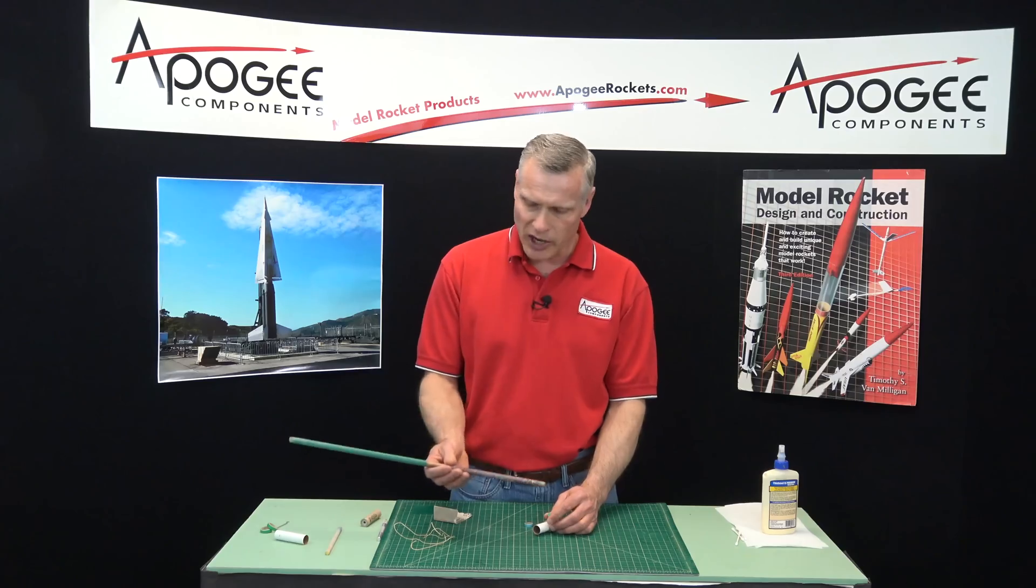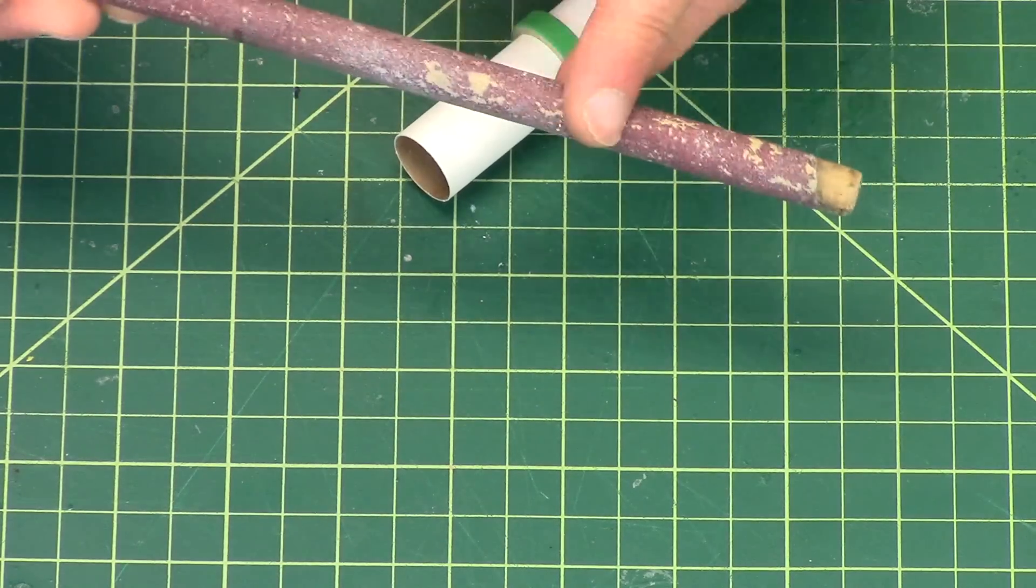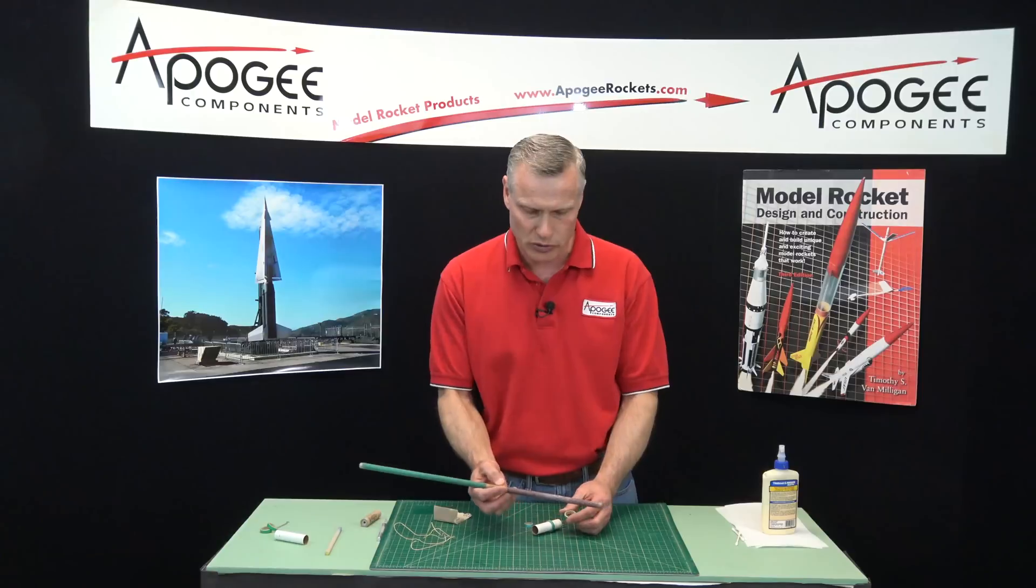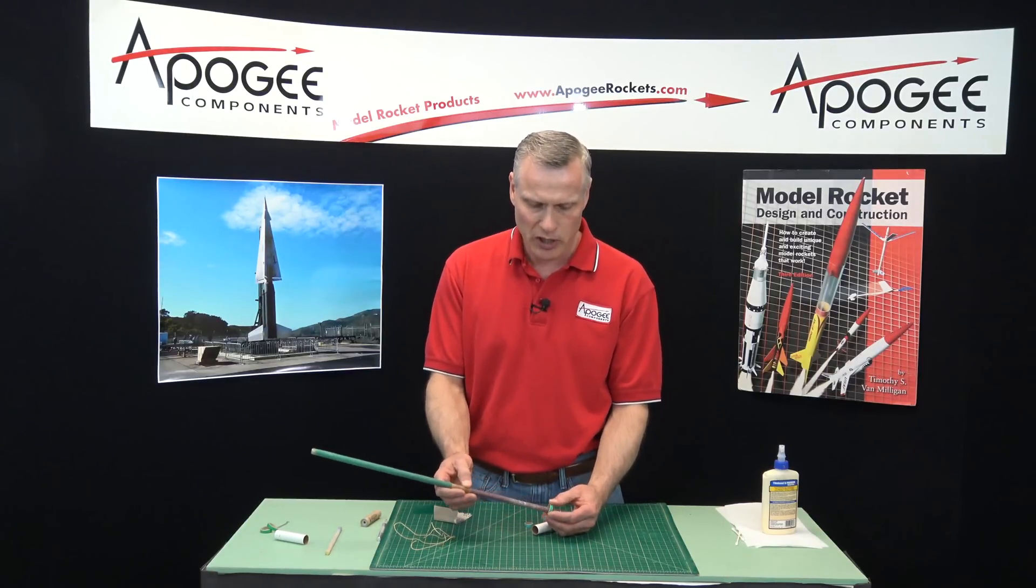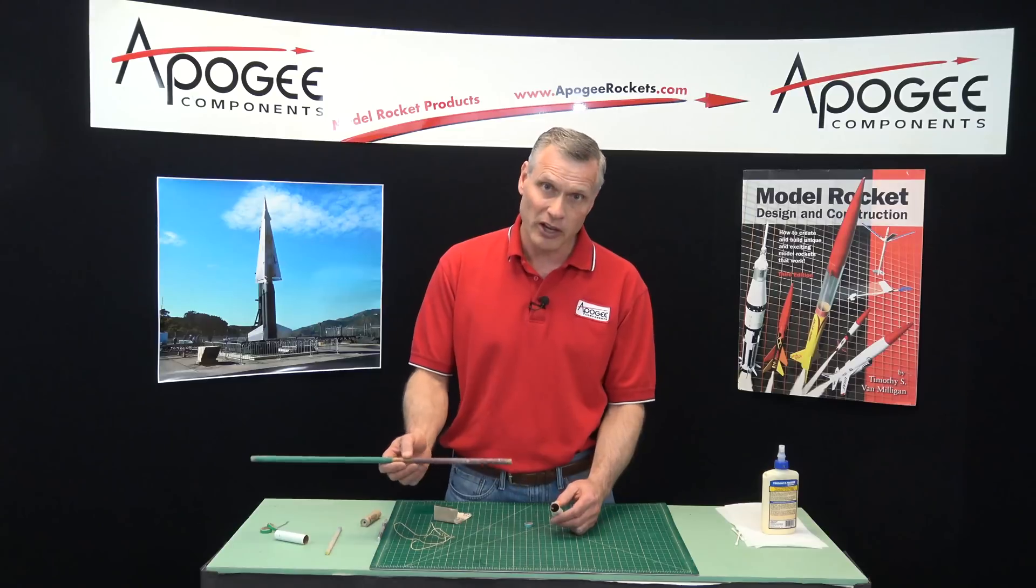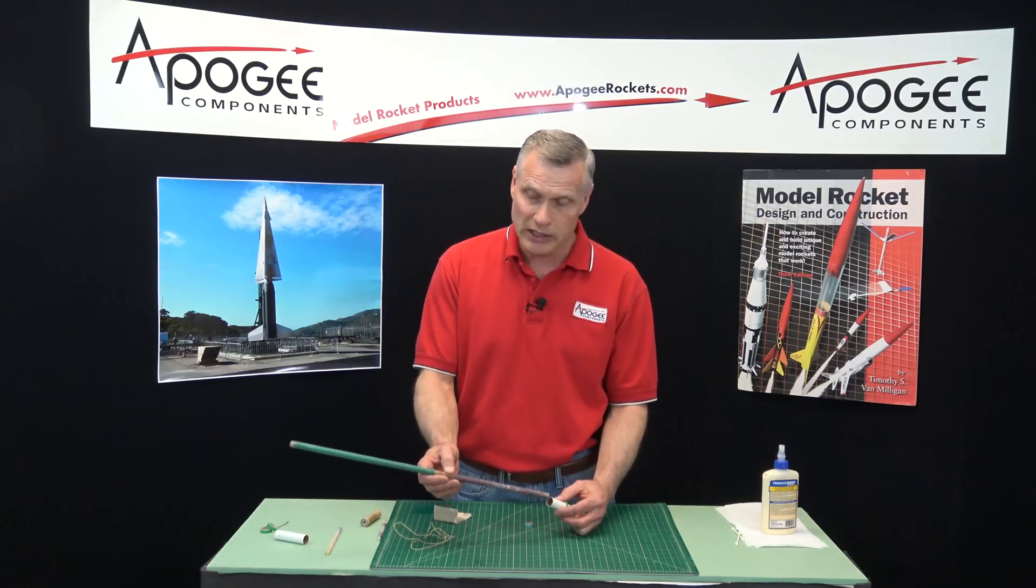I like to take a wood dowel and glue the sandpaper to it. This is one of my favorite tools. I use it all the time. And this allows me to sand out the rings. And if I've got a long rocket, I can get way deep up inside.